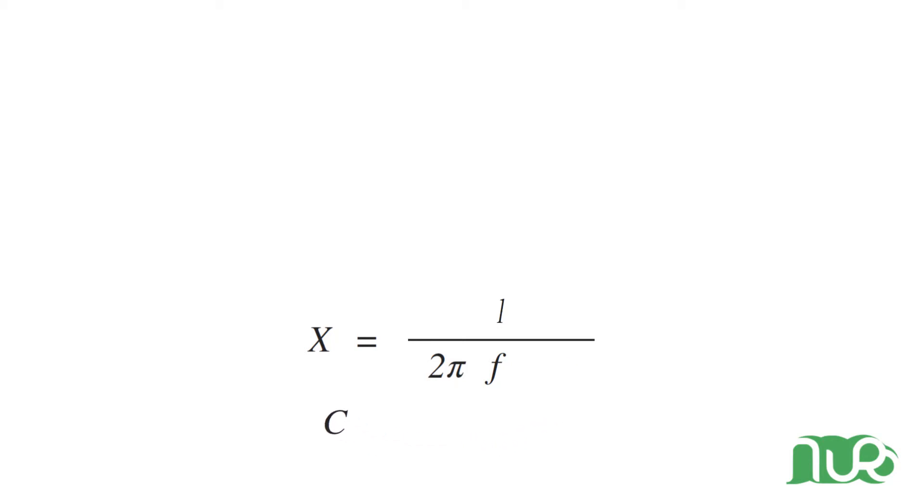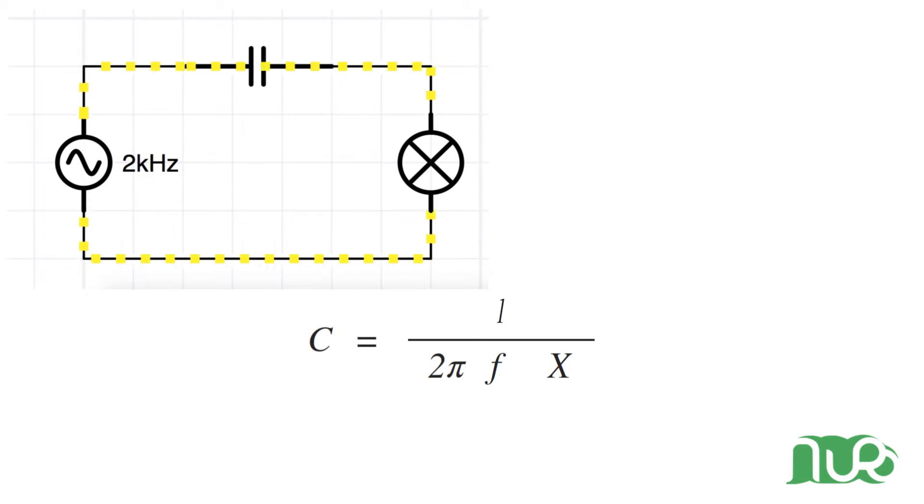So we can rearrange this formula a bit to calculate the size of the capacitor we need so we still have an equivalent of 80 Ohms. The frequency in our circuit is 2 kHz. We want a reactance of 80 Ohms and the rest are all constants. So this is all simple math and gives us a value of around 1 µF.